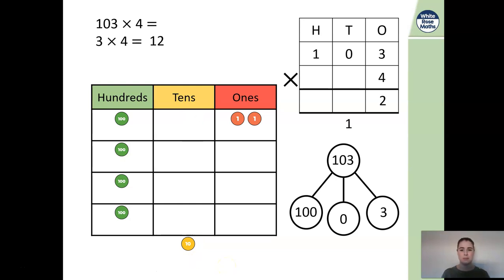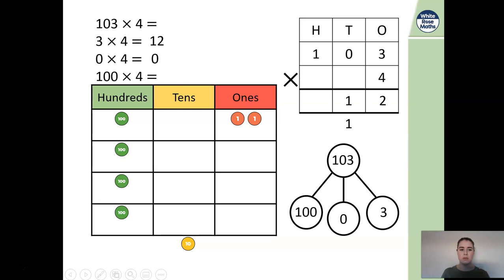Now we look at our second step: zero multiplied by four. Anything multiplied by zero gives us zero, so I could write zero as my answer. However, we had to carry one ten over from our previous step, so we need to remember to add that ten on — giving us one ten in the tens column. Moving on to hundreds: 100 times four is 400. We don't need to carry any zeros, so we simply add the four to our hundreds column and our answer is 412.